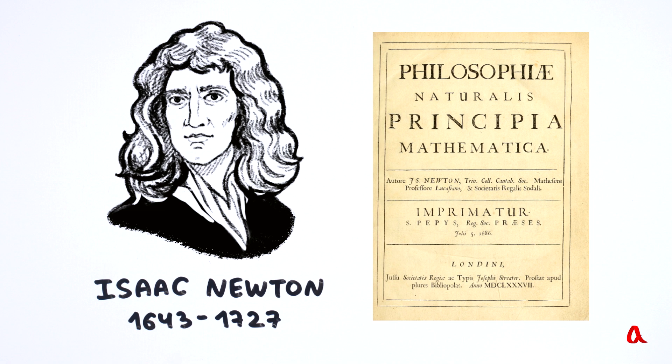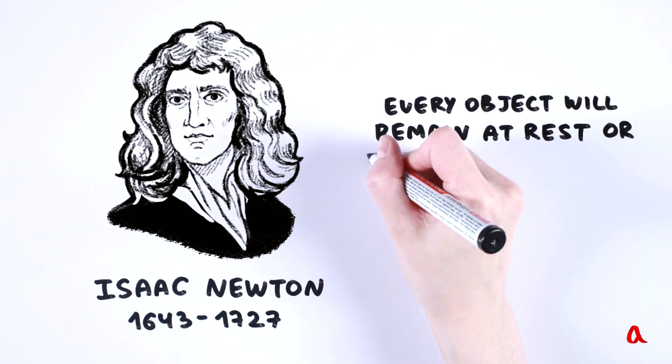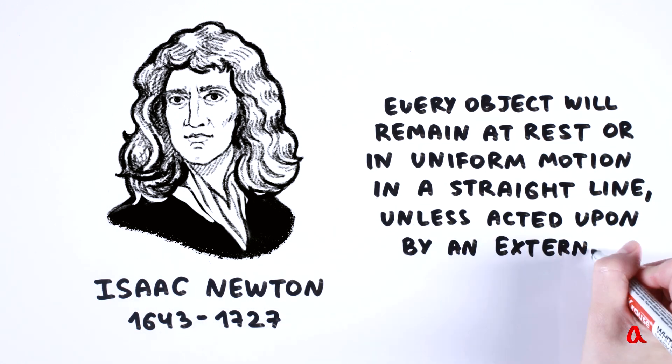Newton himself formulated his first law as follows: Every object will remain at rest or in uniform motion in a straight line unless acted upon by an external force.